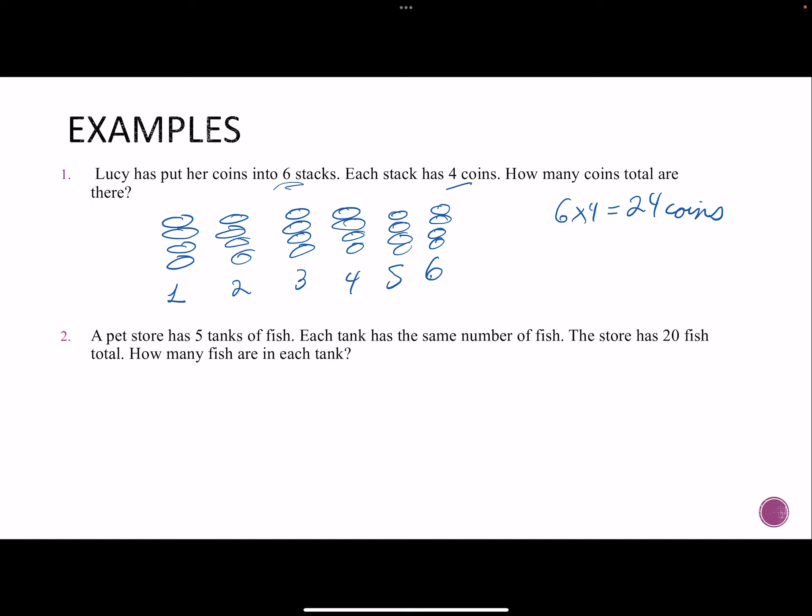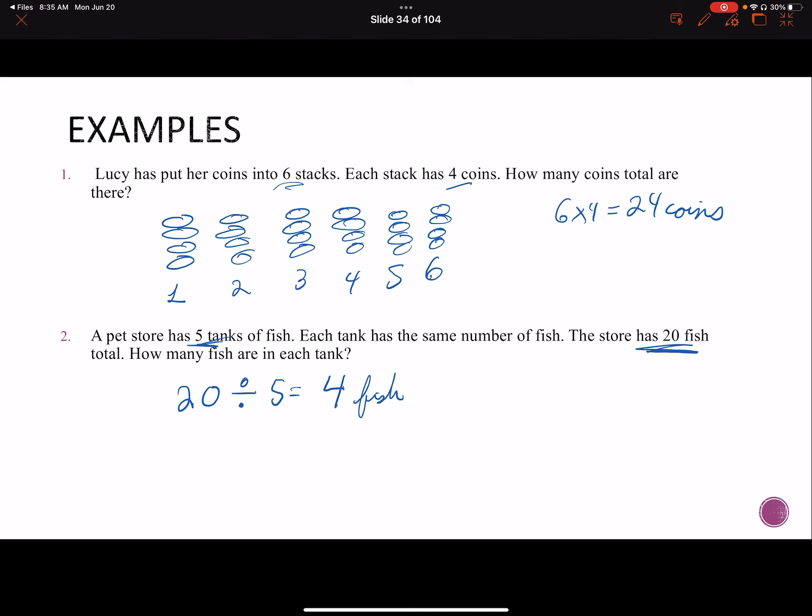Next, a pet store has five tanks of fish. Each tank has the same number of fish and the store has 20 fish total. So how many fish are in each tank? So I have 20 fish and they're separated or divided up between five tanks. So if I take 20 divided by five, that gives me four. So there are four fish in each tank.